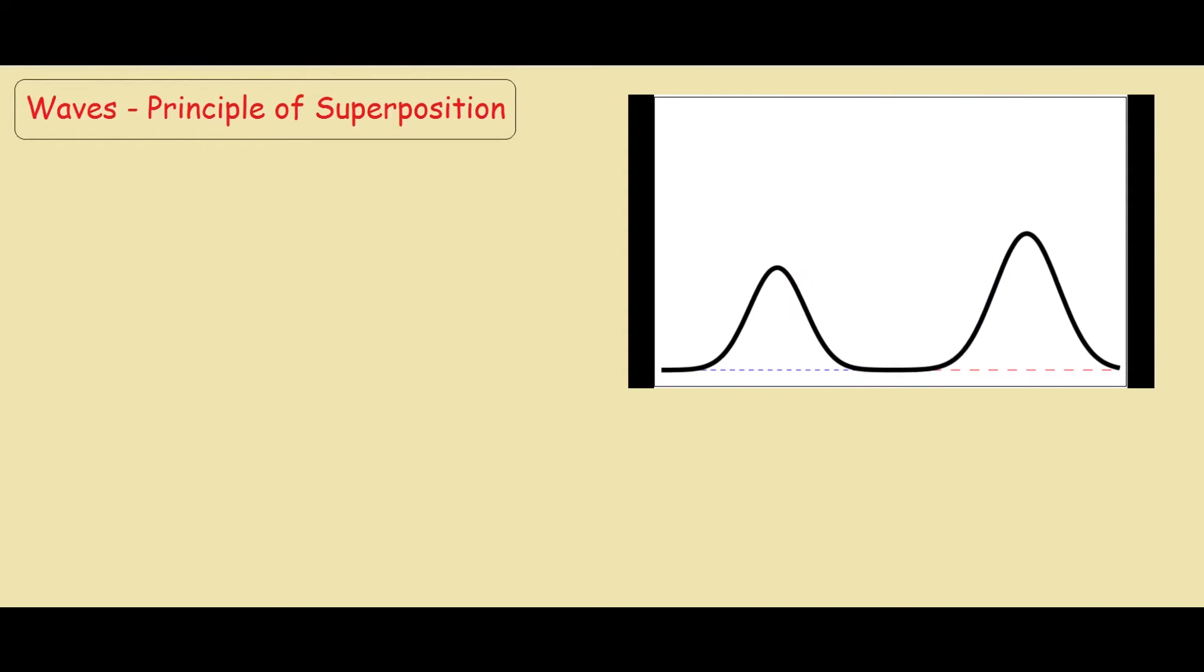What happens when the two waves overlap is that the displacements of the two waves are added together. So mathematically, if you have one wave which is a function of displacement and time, and another wave, wave two, the function when the two wave pulses collide or overlap is just simply the addition of the two wave pulses.